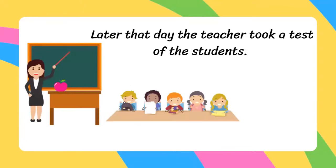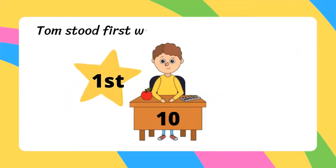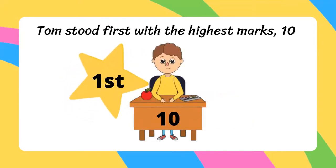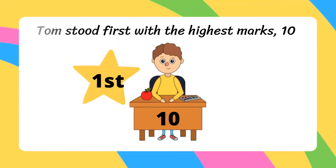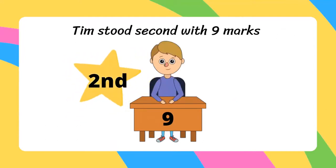Later that day, the teacher took a test of the students. She announced their ranks based on the decreasing order of the marks they had scored. Tom stood first with the highest marks in the class — that is 10 marks. Tim stood second with nine marks.